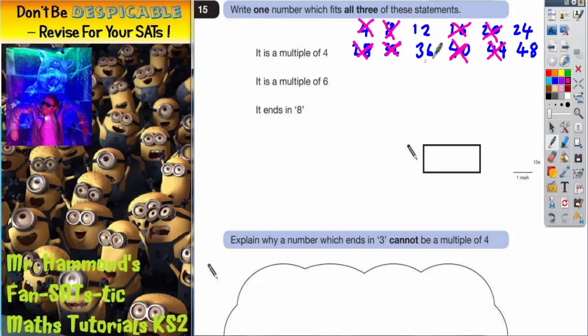But then if we move on to the third clue, it says it ends in eight. Well, which of the four numbers ends in eight? Well, 12 doesn't end in eight, 24 doesn't end in eight, 36 doesn't end in eight, 48 does end in eight. So that would be one number which fits all three statements: 48.